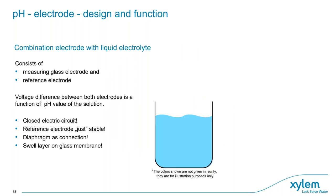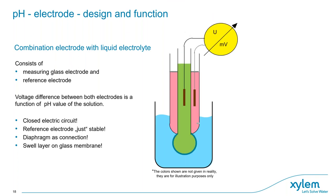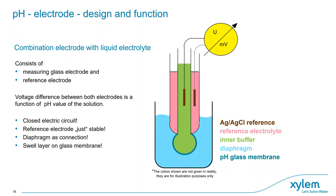Now we come to an important point about how the electrode works. A pH combination electrode consists of the measuring glass and the so-called reference electrode. We want to measure exactly and only the pH-dependent potential created at the glass electrode. On the surface of the glass electrode is the important swell layer — provided it has been stored long enough in water or electrolyte. The more H+ ions are in the solution, the more positive the potential at this swell layer. We cannot simply measure this single potential alone.